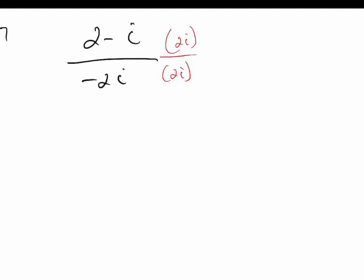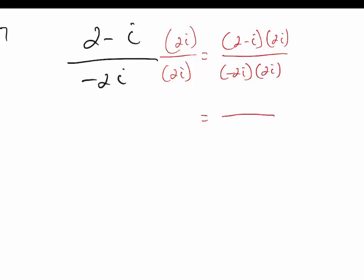I'll use parentheses to make life a little easier when we do distributive property in the numerator. Starting with the denominator: negative 2i times 2i is negative 4i squared. Remember that i squared is negative 1.